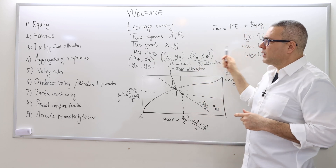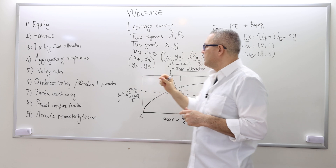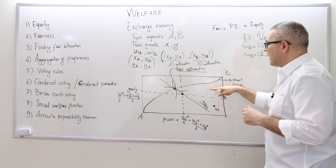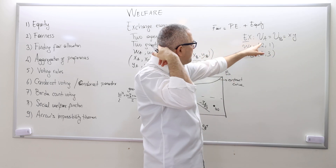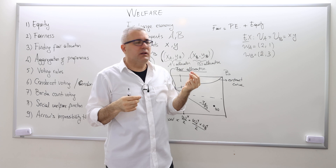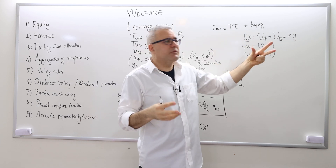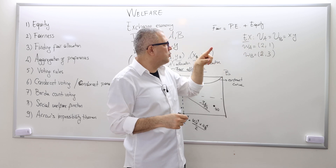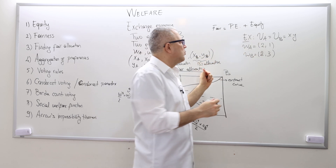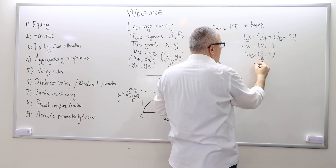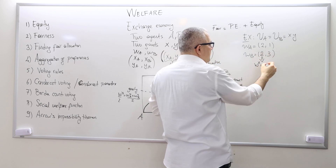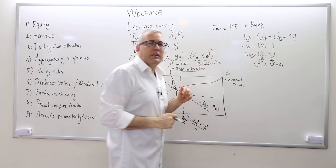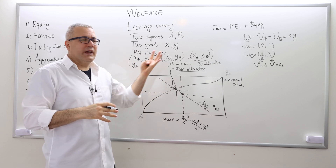Here I have a numerical example where I'm going to find the fair allocation with the method I just described graphically. The agent's utility functions are Cobb-Douglas, x times y. The initial endowment for agent A is 2 good x and 1 good y, and agent B has 2 good x and 3 good y. Therefore, the total number of good x, represented as Wx, is 4, and the total number of good y is also 4.